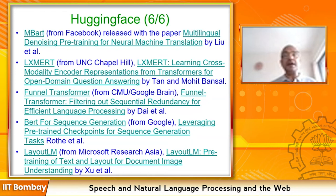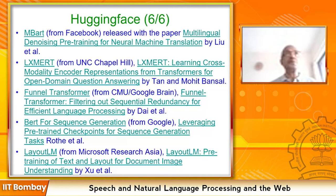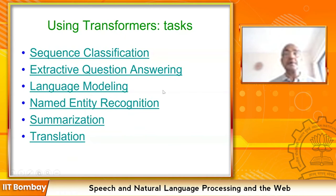Funnel Transformer from CMU and Google Brain: filtering out sequential redundancy for efficient language processing. BERT for sequence generation from Google leverages pre-trained checkpoints for sequence generation tasks. LayoutLM from Microsoft Research Asia: pre-training of text and layout for document image understanding. This listing of various transformers at one place is very beneficial for researchers. The transformer is preceded by LSTM and RNN, and in parallel with feed-forward networks.